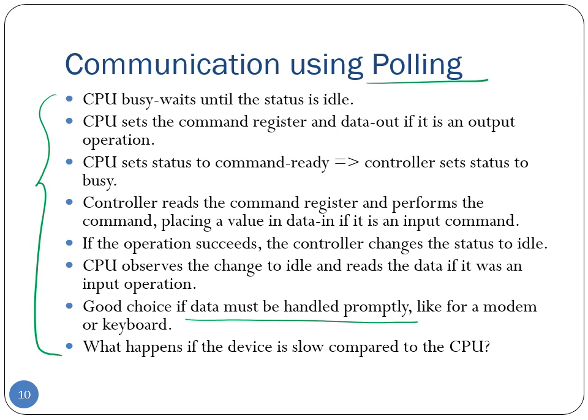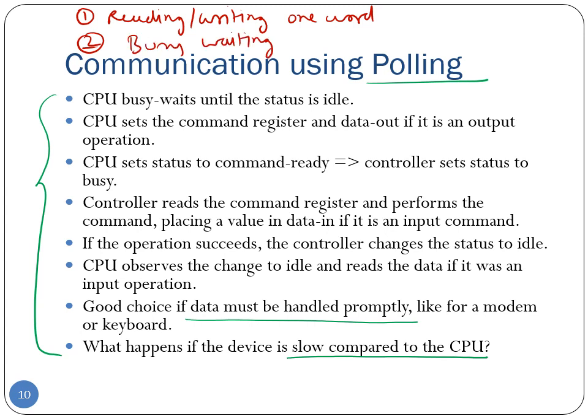However, if the I/O device is extremely slow compared to the CPU, the CPU will end up wasting a lot of time waiting on the status register. There are two important problems with polling-based communication: first, we are reading and writing only one byte or one word at a time; second, for every byte read or written, the CPU must repeat the busy-wait process, which is clearly very wasteful of CPU time if the I/O device is slow.